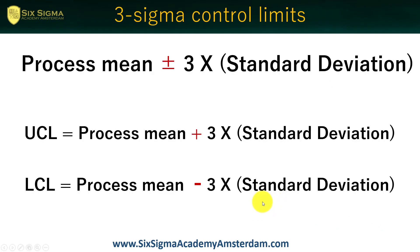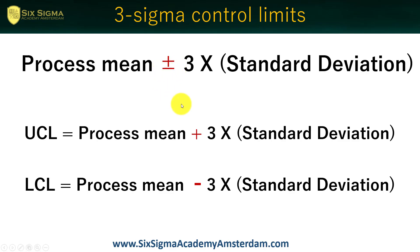How can we find our three sigma control limits? It's very simple. The first step is to estimate the standard deviation of our sample. Once we have that standard deviation, we multiply by three. The upper control limit is the process mean plus three times the standard deviation, and the lower control limit is the process mean minus three times the standard deviation.